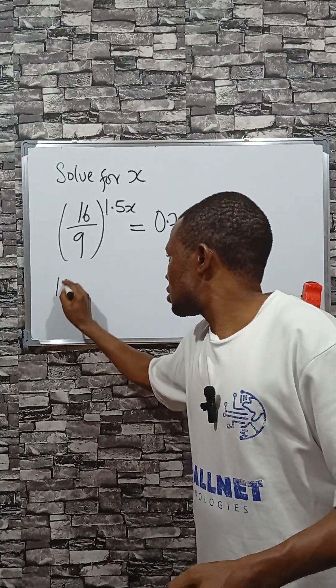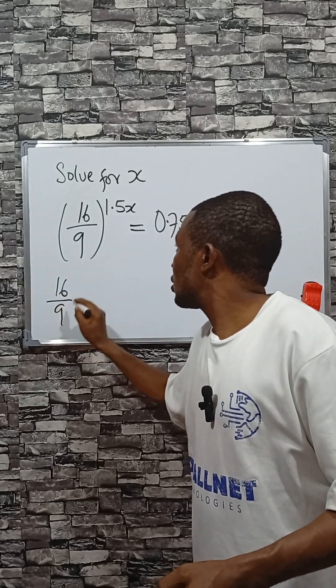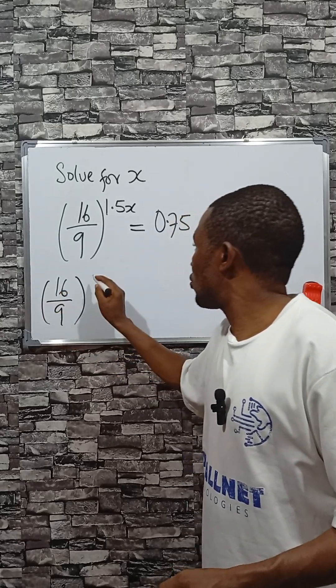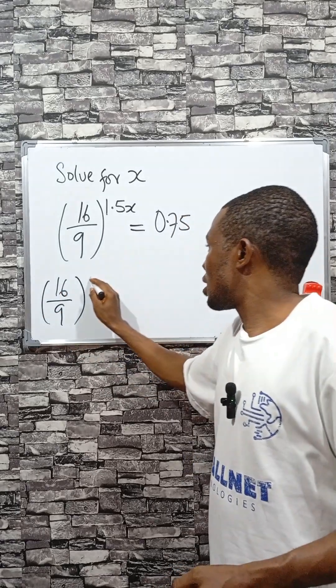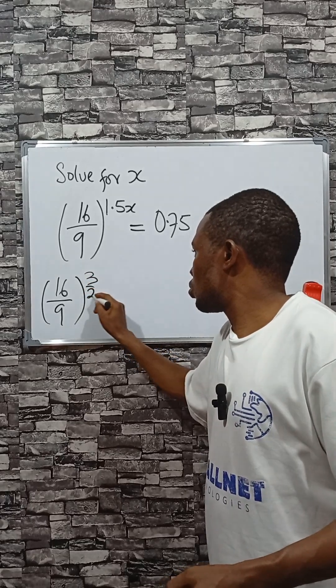Let's see how it goes. 16 divided by 9, raised to the power of 1.5x can be rewritten as 3 over 2x.